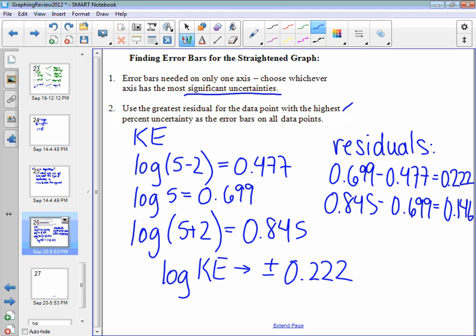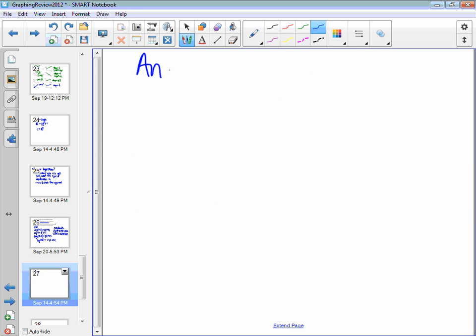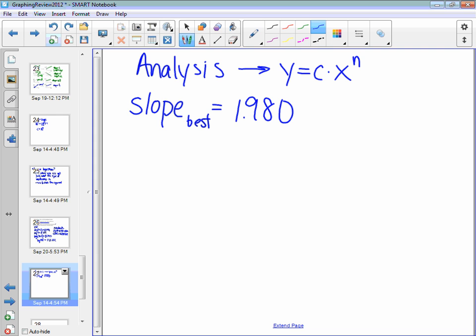The log KE values, their error bars will be plus or minus 0.222. So when you actually do the analysis here for this graph, what you end up with is a slope for your line of best fit that equals 1.980. Remember, the original form of function is y equals c times x to the n. So that slope that you've just found, this is your n, remember, from the previous derivation.